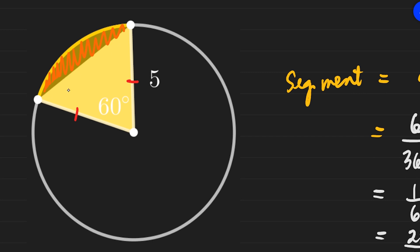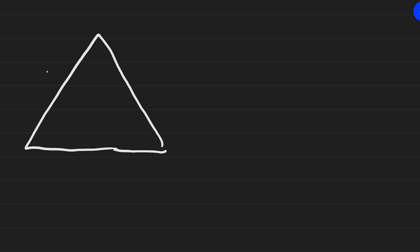To find the area of an equilateral triangle, let's derive the formula. Draw an equilateral triangle with side s and all angles 60 degrees. Drop a perpendicular height — now we have a 30-60-90 triangle. The side opposite 90 degrees is s, the side opposite 30 degrees is s over 2, and the side opposite 60 degrees — the height — is s times square root of 3 over 2.